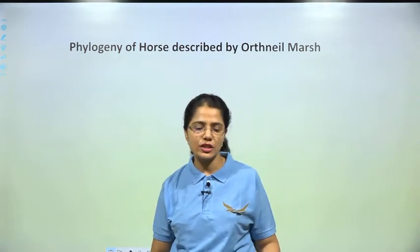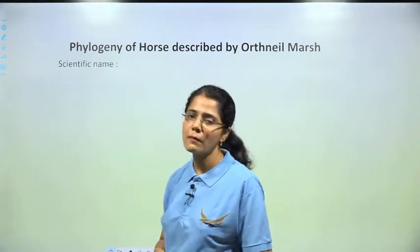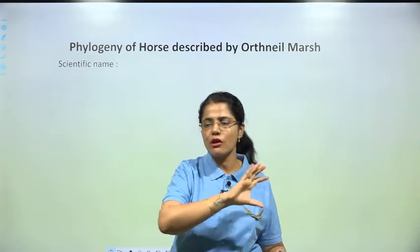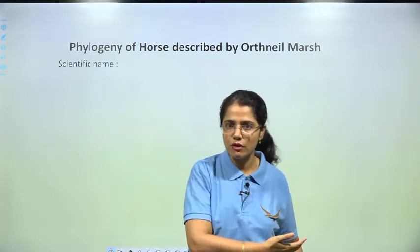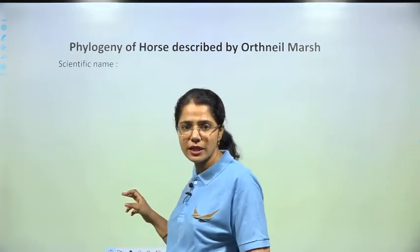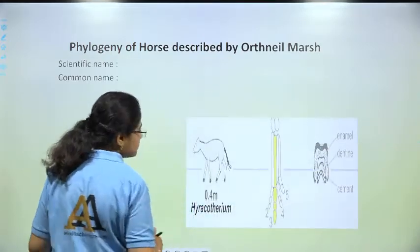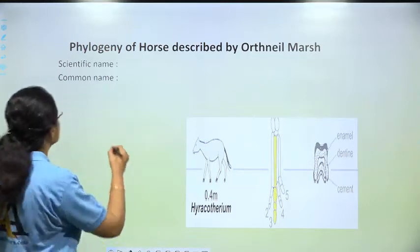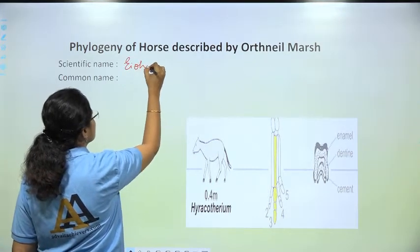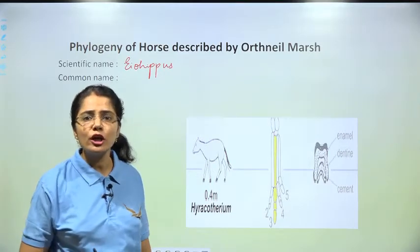Moving on to the phylogeny of horse, remember it was described by Othniel Marsh. The first ancestral form of the modern horse has the scientific name Eohippus — commonly called the Dawn Horse.